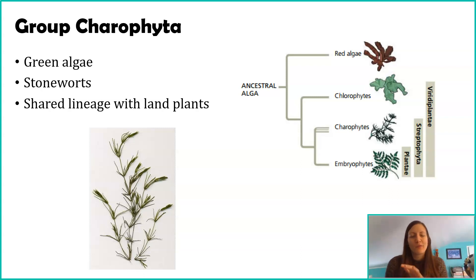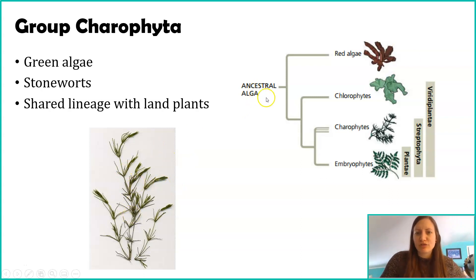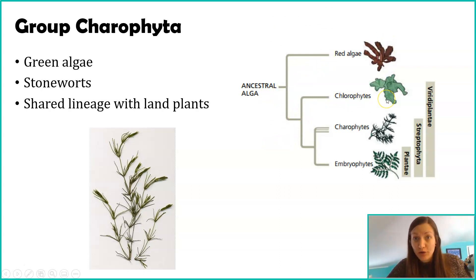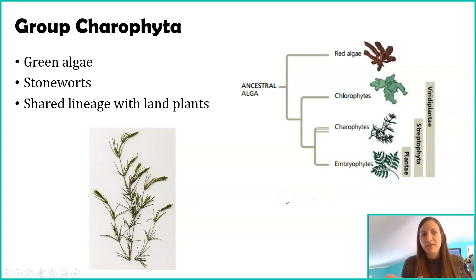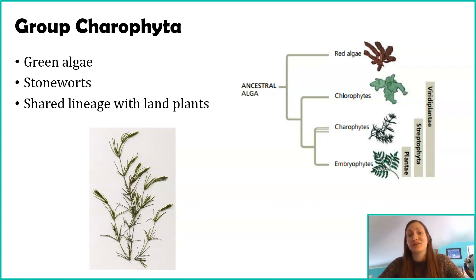Despite looking a lot like plants, Charophytes are not plants. What is cool is that scientists are pretty sure land plants branched off from the Charophytes. Looking at a simplified phylogenetic tree: ancestral algae diverges into red algae, then into Chlorophytes like Volvox, and then into Charophytes and land plants. So Charophytes and land plants share a very close lineage and many similar characteristics. Stoneworts look like land plants because they share a fairly recent common ancestor with them, but they're found in water and lack vascularization.